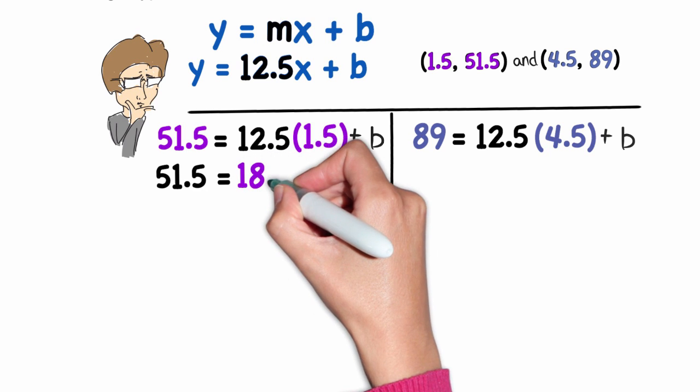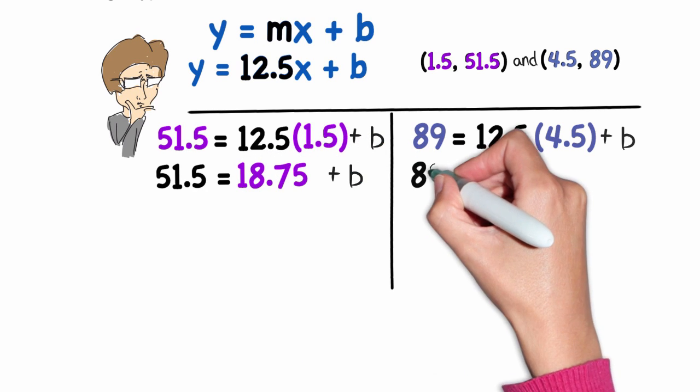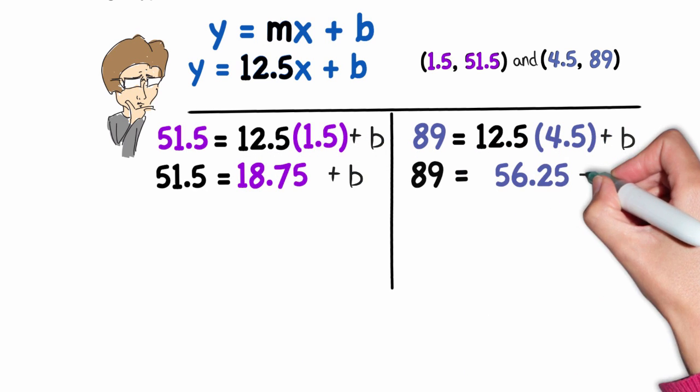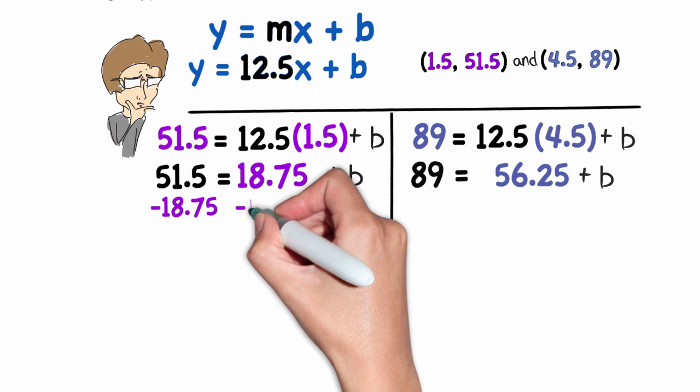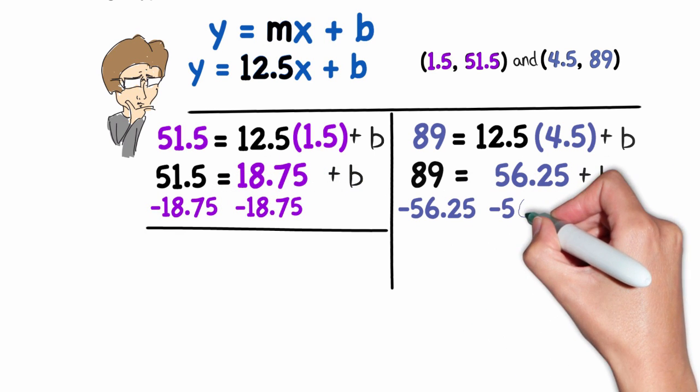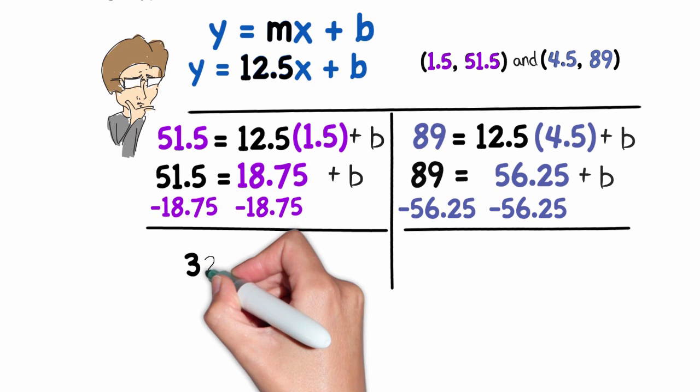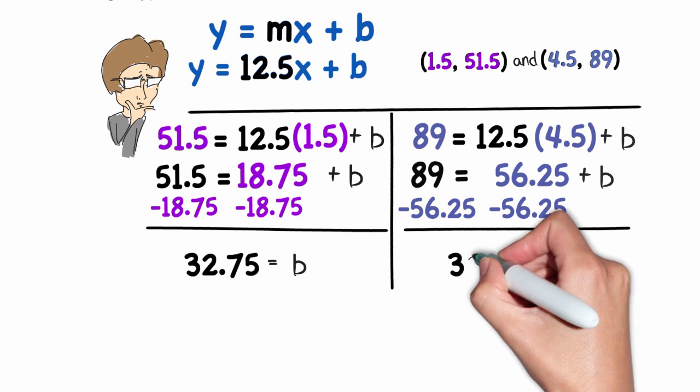Afterwards, I'm going to multiply my slope times the x value. I will need to subtract that from both sides of the equation. And I get the value 32.75 for my y-intercept.